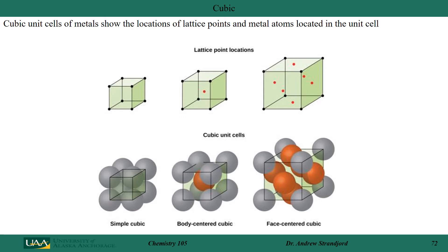In addition to a simple cubic crystalline material, some metals actually form what is called a body-centered cubic, where the unit cell is still cubic but right in the center is another atom or molecule. We also have a type called face-centered cubic, where the unit cell is again cubic but in this case there is another atom on each face that fills in that lattice structure. So we have simple cubic, body-centered cubic, and face-centered cubic.